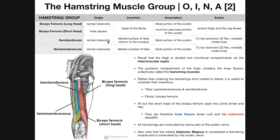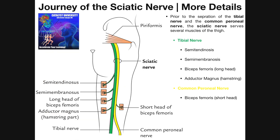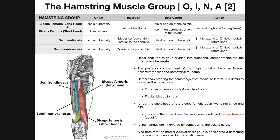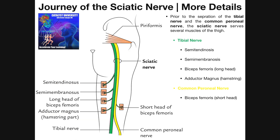In terms of innervation — as mentioned in the video on the sciatic nerve — for the biceps femoris long head, semitendinosus, and semimembranosus, their innervation is from the tibial portion of the sciatic nerve. The sciatic nerve is composed of two halves: a tibial portion, which is the more medial one, and a common peroneal or common fibular portion, which is the lateral one. The semitendinosus, semimembranosus, long head of the biceps femoris, and the hamstring part of the adductor magnus are all innervated by the tibial portion of the sciatic nerve. Whereas the short head of the biceps femoris is the only one innervated by the common peroneal nerve.